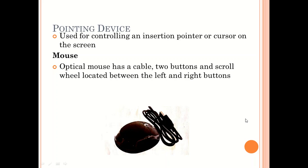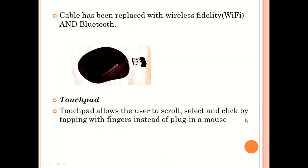We also have what you call the Bluetooth mouse. With this one, you take the sensor and plug it into your computer system. This is a mouse that enables you to use it anywhere within a certain range — it doesn't need to be physically attached to your computer. You can attach the sensor and then use the mouse within a range of almost 10 feet or so.